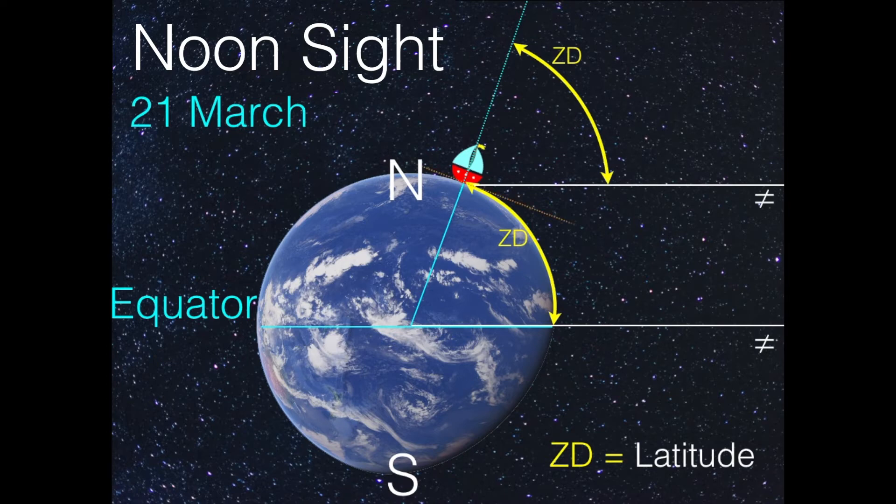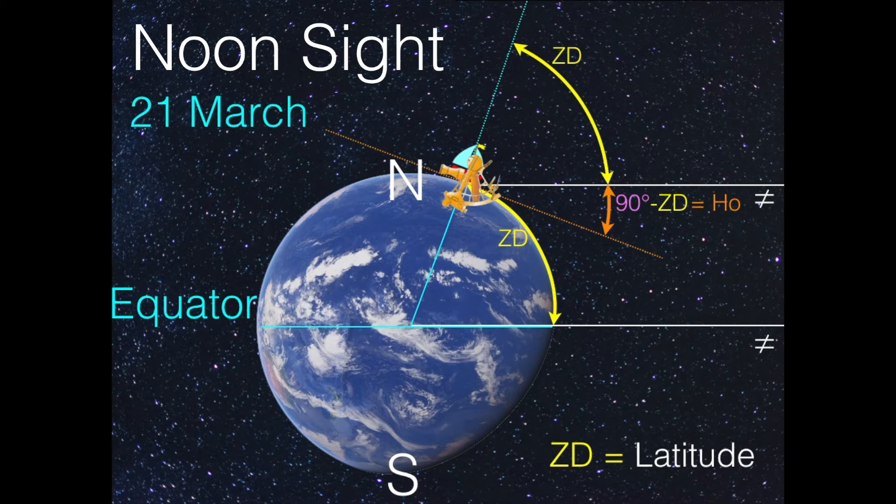Now, this is very difficult to measure. It's much easier to measure between our horizon in orange and the celestial body. And as we have learned, this is exactly 90 degrees minus the zenith distance, because it's a right angle between the horizon and the point exactly above us in the turquoise dotted line. So the zenith distance is 90 degrees minus HO, minus our measured angle. And here we can see that is exactly the latitude.